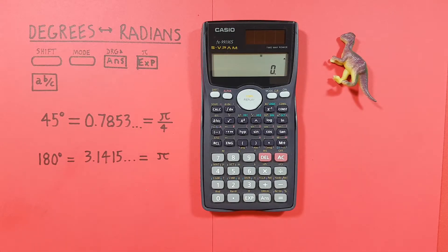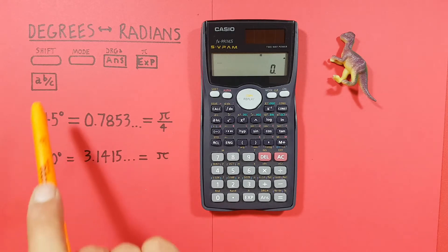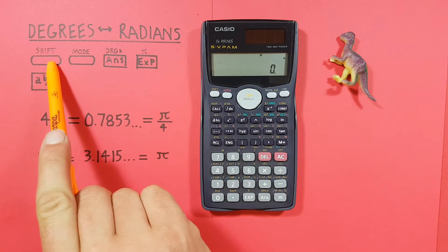Hello and welcome to HD Calcs. I'm Rick and in this video we're going to have a look at how we can convert between degrees and radians on the Casio FX 991 MS calculator. To do this we need to use the shift key, located here.